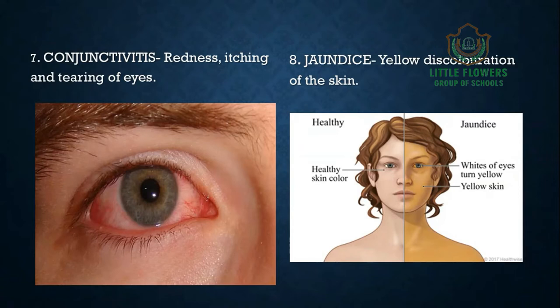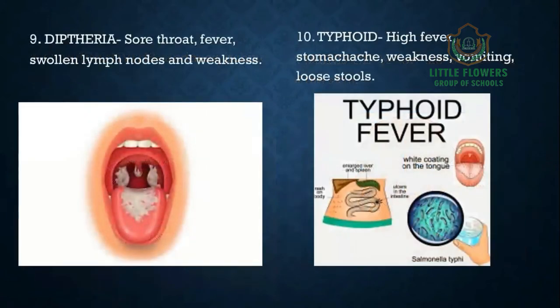Number seven is conjunctivitis; its symptoms include redness, itching, and tearing of the eyes. Number eight is jaundice — in this disease you can see yellow discoloration of the skin, mucous membranes, and whites of the eyes. Number nine is diphtheria; symptoms are sore throat, fever, swollen lymph nodes, and weakness. Number ten is typhoid; symptoms include high fever, stomach ache, weakness, vomiting, and loose stools.